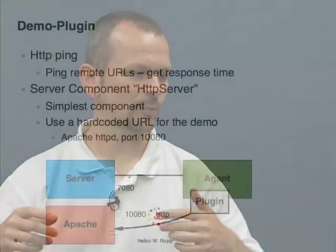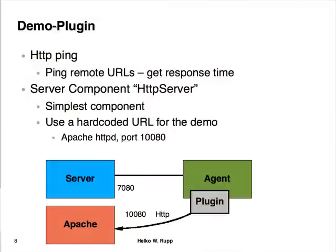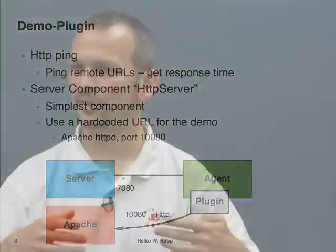At the bottom of the slide, you can see the setup. Our RHQ server is shown in blue with the agent in green. This is actually an embedded agent, but it doesn't really matter. There we deploy our plugin, which is talking to the Apache server on port 10080.